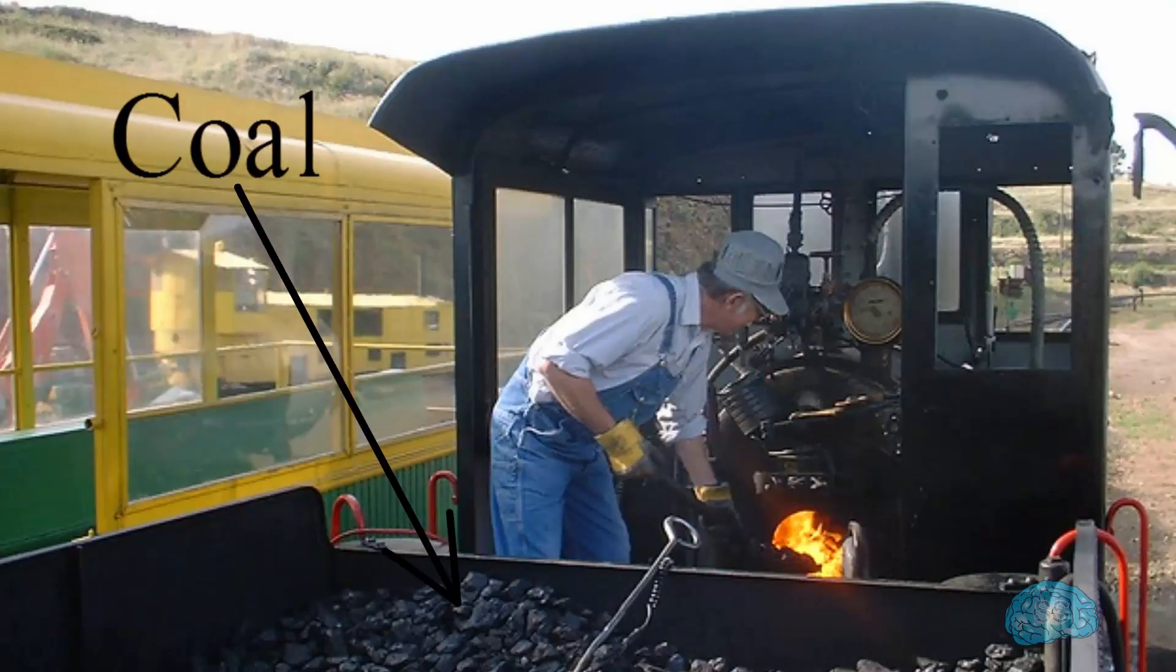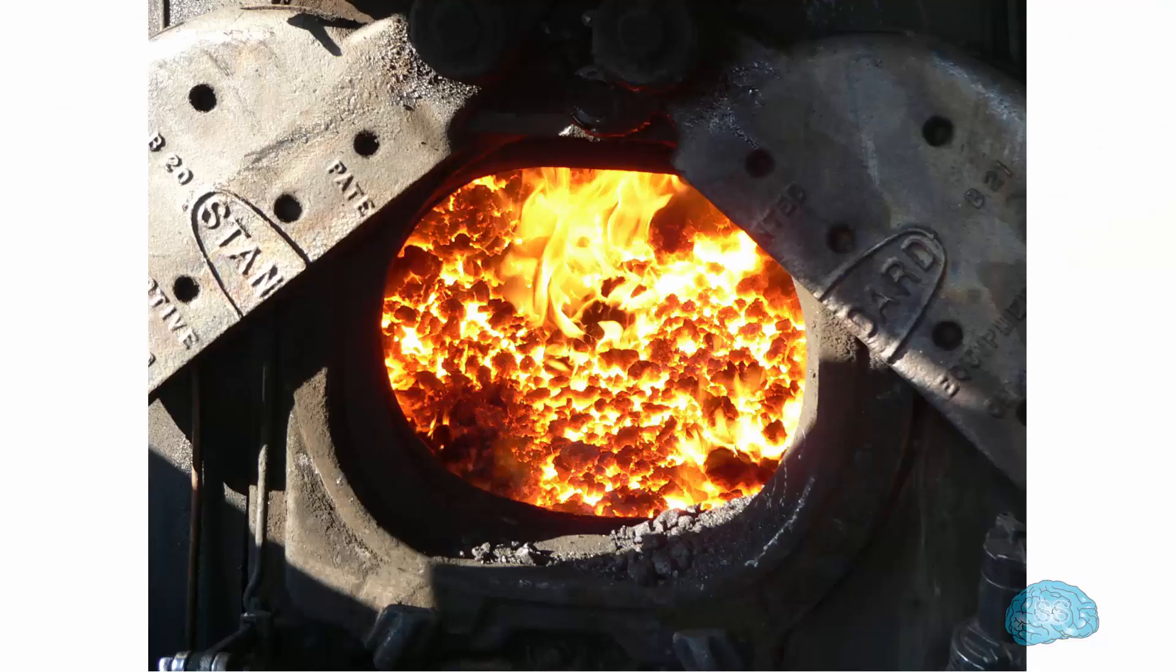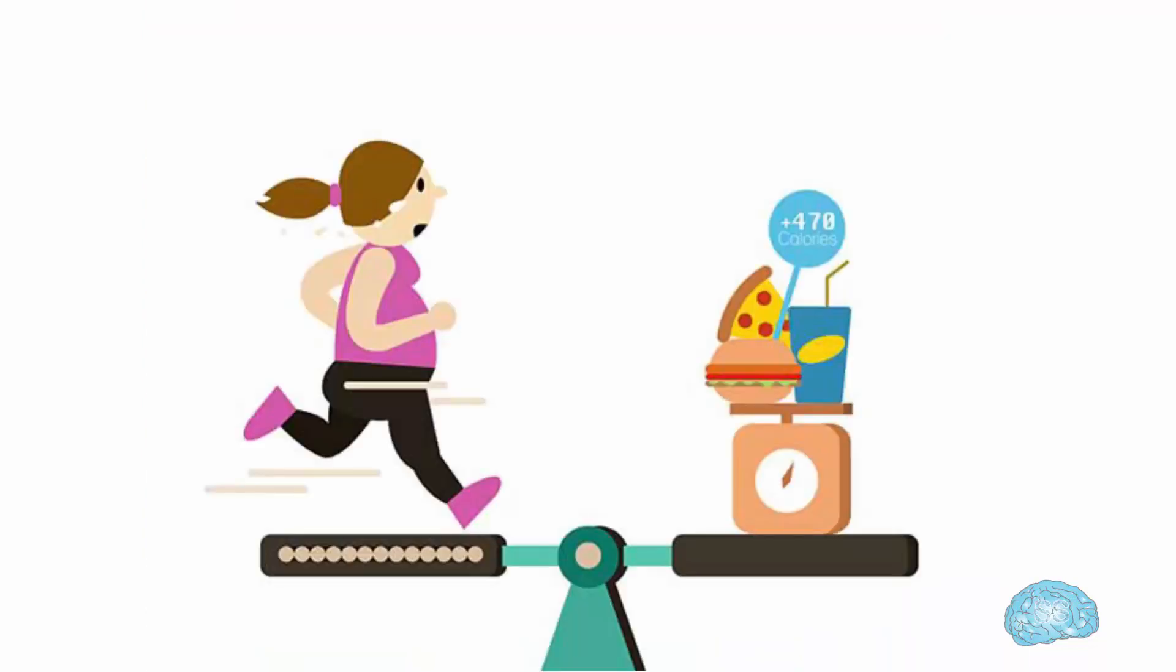Coal is fed as fuel to the steam engine. Food is fed as fuel to the human body. Coal is burned to get energy for the steam engine. Food is burned to get energy for the human body.